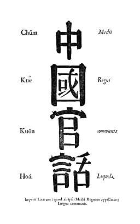In the United States and elsewhere in the Chinese diaspora, Standard Chinese is also commonly referred to by generic names for Chinese, notably Zhongwen meaning 'Chinese writing,' and Zhongguohua meaning 'China speech.' In total, there have been over 20 various names known for the language.